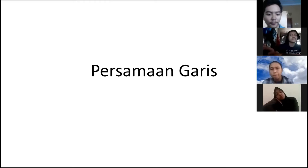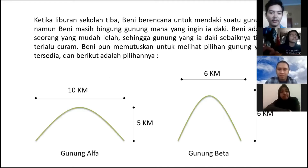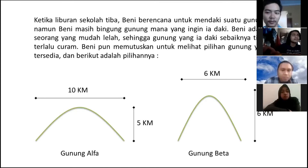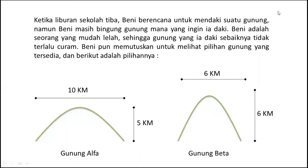Oke, apa sih persamaan garis itu? Kita akan mulai dari memahami soal kontekstualnya. Ketika liburan sekolah tiba, Benny berencana mendaki suatu gunung namun masih bingung gunung mana yang ingin dia daki. Benny adalah seorang yang mudah lelah, sehingga gunung yang ia daki sebaiknya tidak terlalu curam. Benny pun memutuskan melihat pilihan gunung yang tersedia — ada gunung alfa dan gunung beta. Panjang gunung alfa 10 km, tingginya 5 km; sedangkan gunung beta panjangnya 6 km, tingginya 6 km.